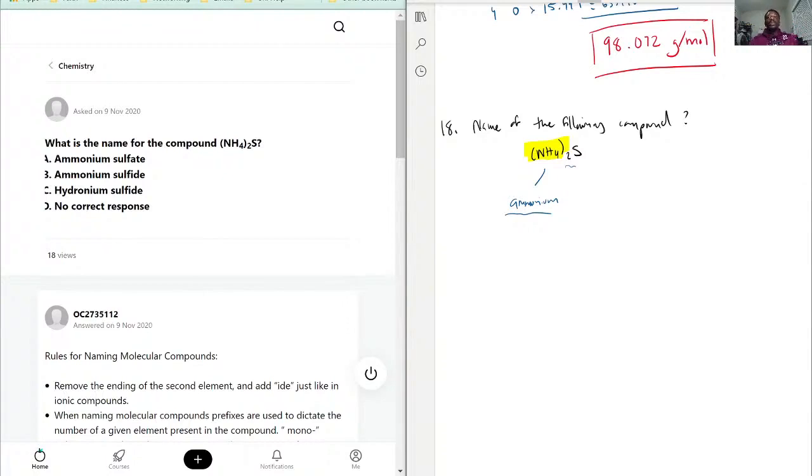You will never see something like diammonium. Ammonium itself works almost like metal, if that makes sense, at least with the naming. With the naming, it's the metal component, so you wouldn't need to indicate how many you have. That's why it just stays as ammonium.